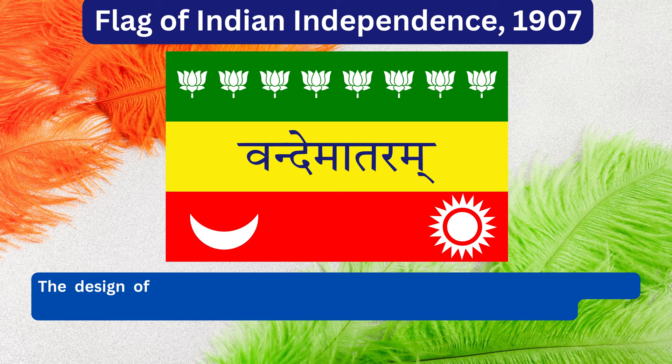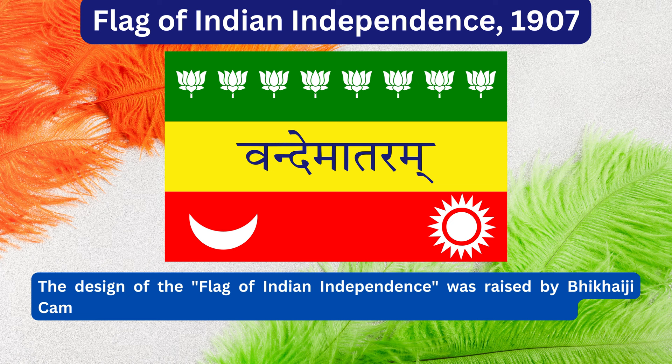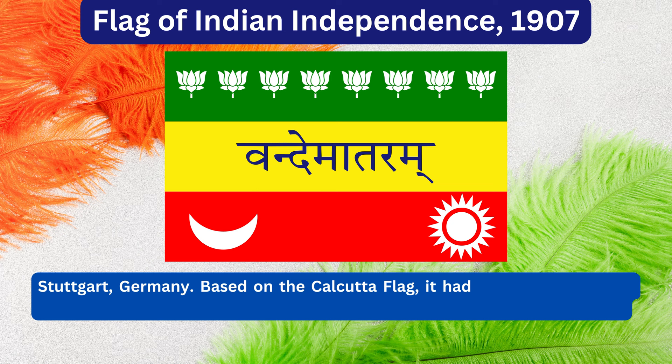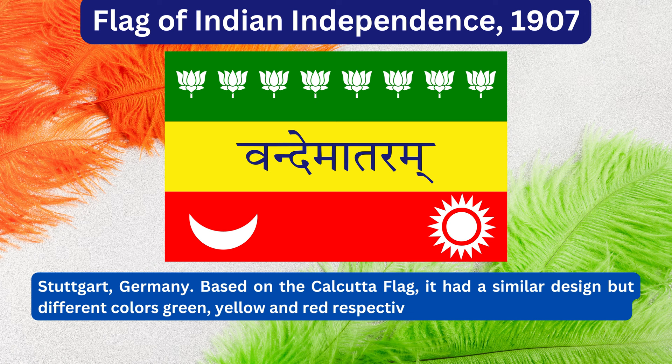The design of the flag of Indian independence was raised by Bikaiji Kama on 22nd August 1907 at the International Socialist Conference in Stuttgart, Germany. Based on the Calcutta flag, it had a similar design but different colours — green, yellow and red respectively — which represent Islam, Hinduism and Buddhism.